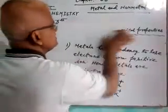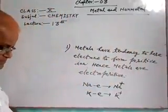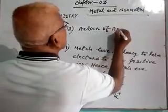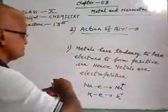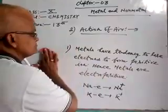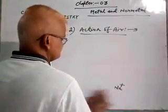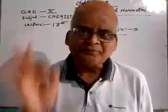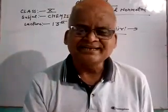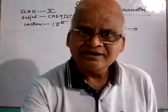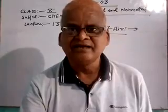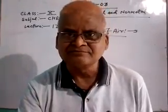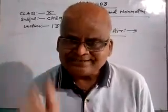Now I will write the second chemical property of metal: action of air. Most of the metals react with air to give the corresponding metal oxide. Our most reactive metals, sodium and potassium, are very reactive elements.